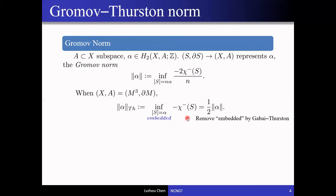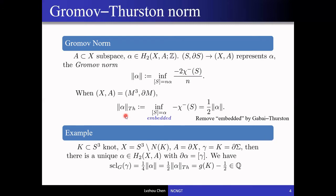One nice thing about the Thurston norm is that it is always an integer by definition, since it is an infimum of a collection of integers. As a concrete example, take a knot in the three-sphere and let the knot complement be our space X, with the subspace A being the boundary torus. Each knot spans some Seifert surfaces — embedded surfaces in the knot complement whose boundary is exactly the knot. We can think of the knot as an embedded loop on the boundary torus, and each Seifert surface represents a homology class alpha.